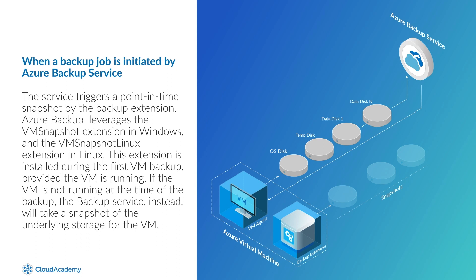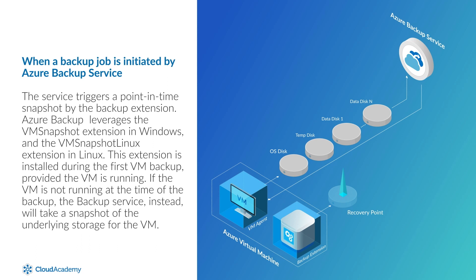After taking a snapshot, the Azure Backup service transfers the data to the Vault. Azure Backup maximizes efficiency by transferring only the changed data since the last backup. After the data transfer to the Vault is complete, the snapshot is removed and a recovery point is created.